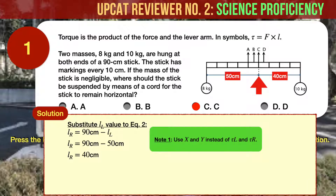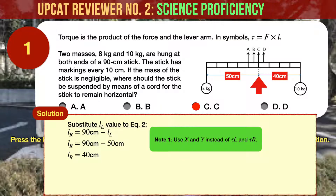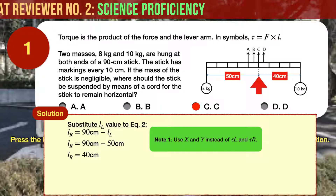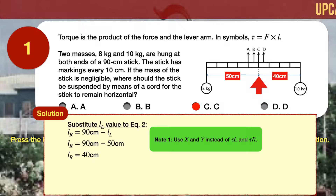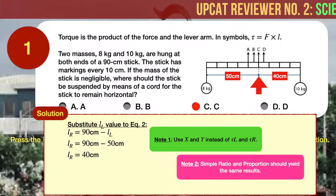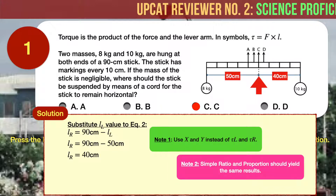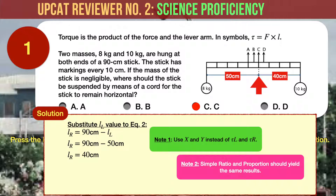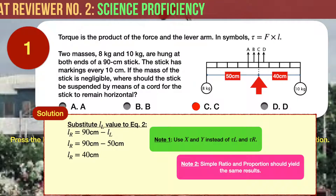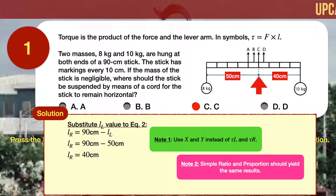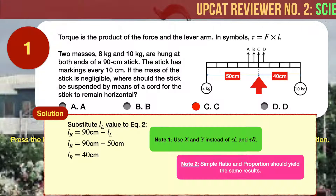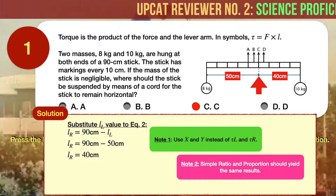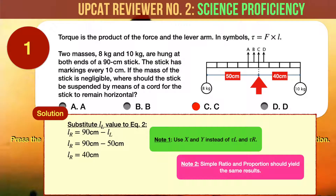We have possibly useful notes for you in relation to this problem. Note number 1: it will probably be easier and faster to use X and Y or some other variables instead of tau L and tau R. Note number 2: the solution we just presented is the formal and mathematical solution. However, if pressed for time, especially in an exam, a visual inspection of the diagram and the use of simple ratio and proportion should be sufficient to arrive at the answer, since the mass of the stick is negligible and no other forces such as friction or wind resistance have been mentioned.